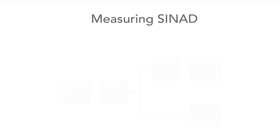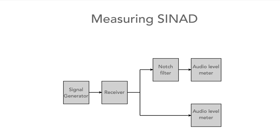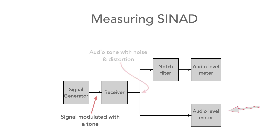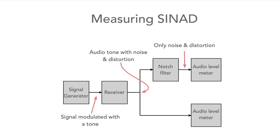The setup for measuring the SYNAD of a radio is relatively straightforward, as we can see now. A signal modulated with a tone is applied to a receiver and the output is connected to two audio level meters. One is connected directly to the output and the other is connected via a notch filter, which filters out the audio tone to give just the noise and distortion.